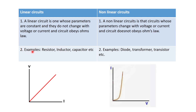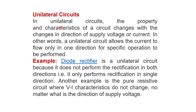Examples of linear circuits include resistors, inductors, and capacitors, whereas examples of non-linear circuits include diodes, transformers, and transistors. The VI characteristics of a linear circuit is a straight line passing through the origin, while the VI characteristics of a non-linear circuit is a curved or non-linear plot.